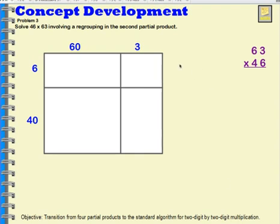Okay, so now I'm going to find the area of this portion of my rectangle. 6 times 3. 6 ones times 3 is 18 ones. Let's take a look at this one. 6 tens times 6. Well, 6 times 6 is 36. So 6 times 6 tens would be 36 tens. 36 tens is equal to 360.